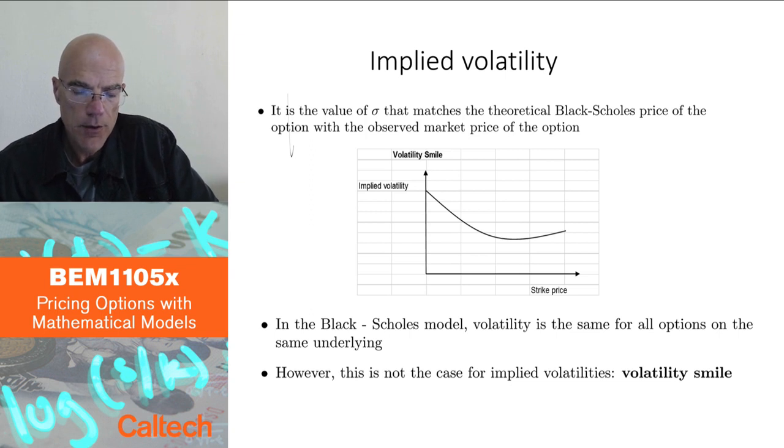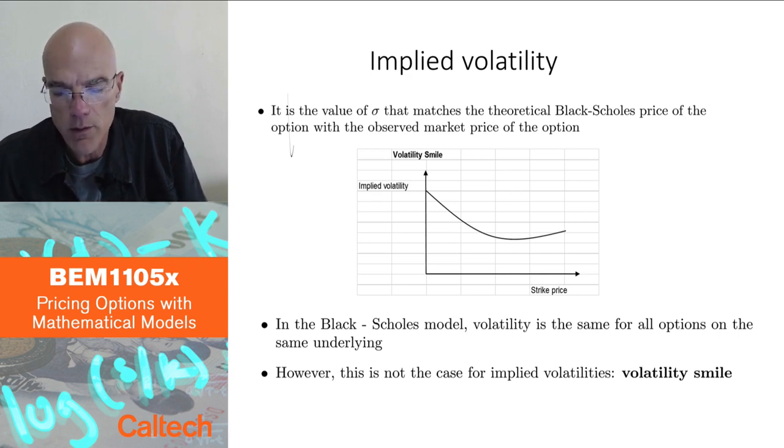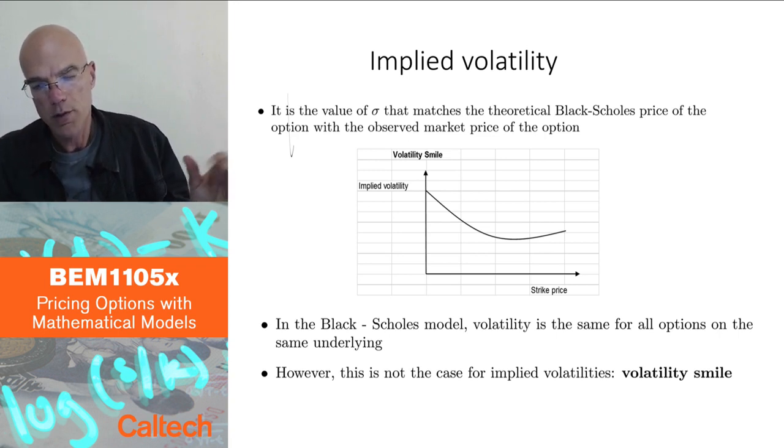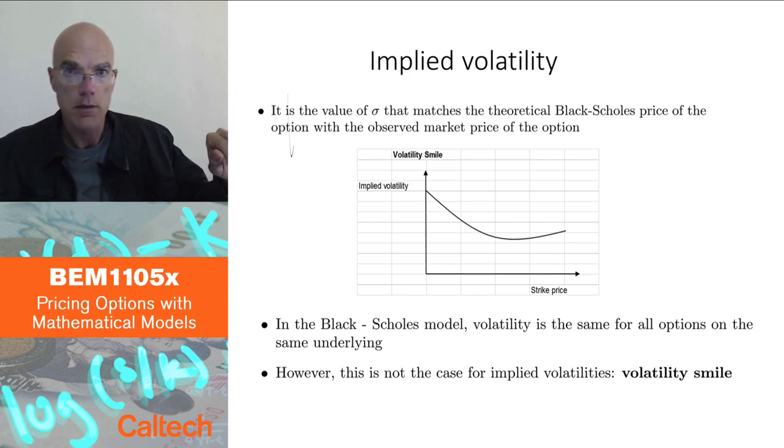And this slide shows you this concept of implied volatility and how you can, in fact, from the data, from market option price data, how you can conclude that the market is not really pricing options using the Black-Scholes model. So what is implied volatility? Implied volatility is the value of sigma that you choose so that the theoretical Black-Scholes price of the option is equal to the observed market price of the option.